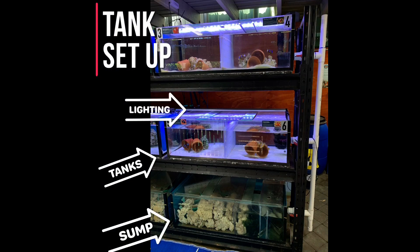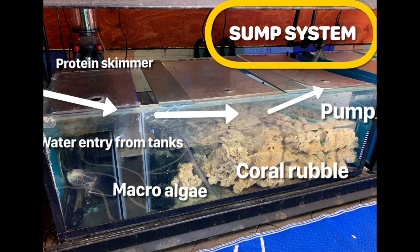This is our tank setup. It is really important to get the tank setup correct to make sure that the water quality is at an optimum level for the fish. At the bottom is the sump, then the water gets pumped through this system up into our tanks. The lighting on top plays a big part in our tank setup. Water comes from the tanks down into this sump at the bottom of the tank system. It flows through the macroalgae and the coral rubble, which provide a filtering system and good bacteria for the water. It flows to the back corner where the pump will take that nice clean water back up into our tank system for the fish. There is also a protein skimmer in the back corner which helps take out the animal proteins out of the water system.